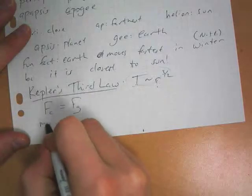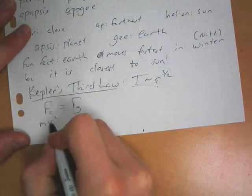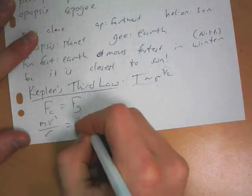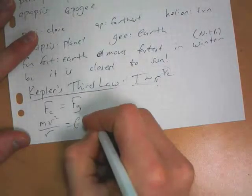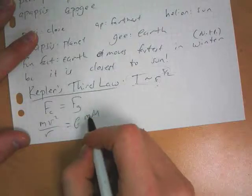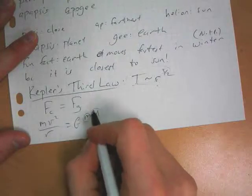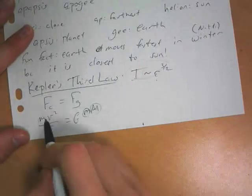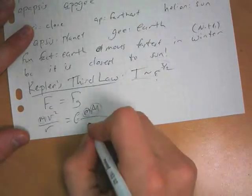So we put mv squared over r, and we set that equal to g times mass. And I'm using big m and little m. This is the orbiting object, this is the orbited object, and I'm using that that way because this mass is the orbiting object over r squared.